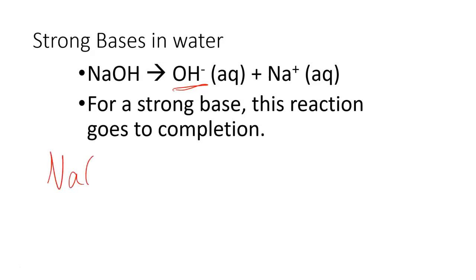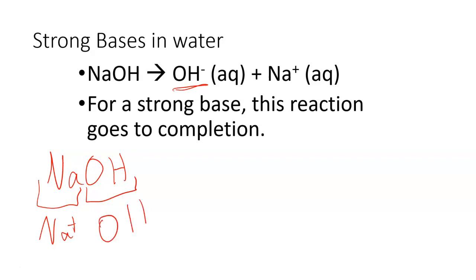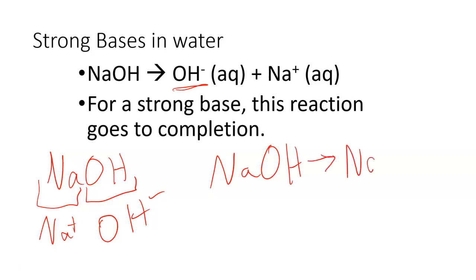For NaOH, we can see Na is our Na⁺ ion. The OH part is OH⁻. We have one of each, so NaOH is going to split into Na⁺ and OH⁻.